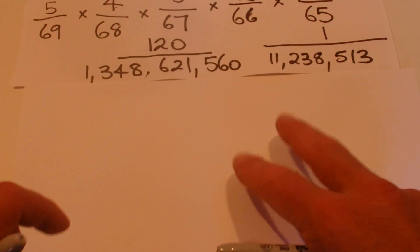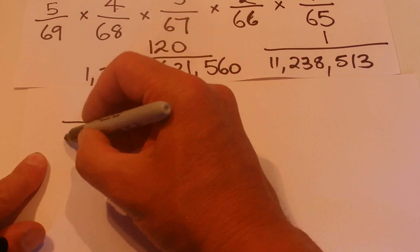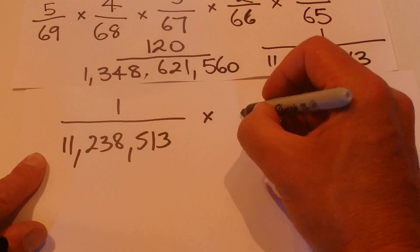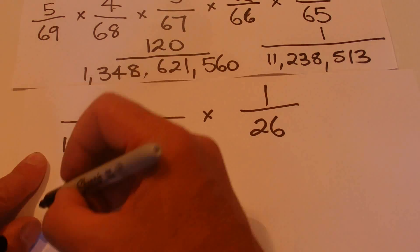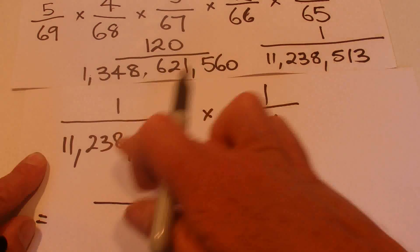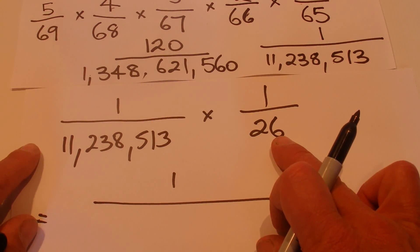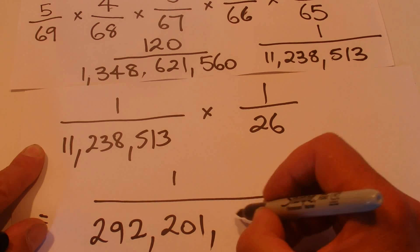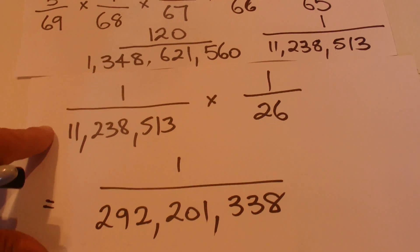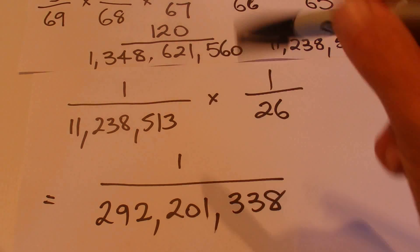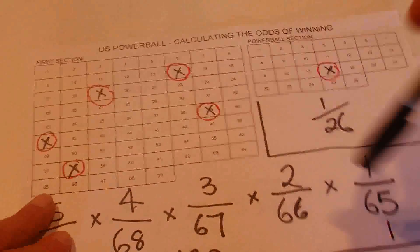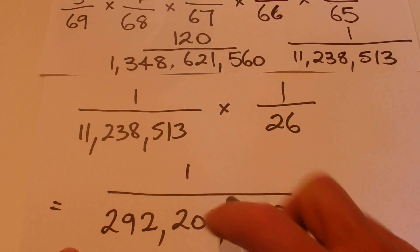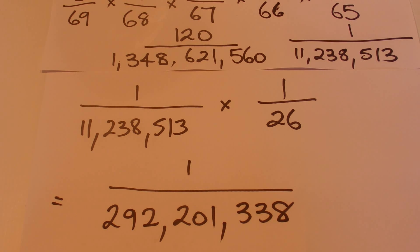We then multiply the one chance in 11,238,513 by one chance in 26 to get our final odds. That gives us one chance in 292,201,338. So the odds of correctly selecting five numbers in the first section and the Powerball number are one chance in two hundred and ninety-two million. Good luck!